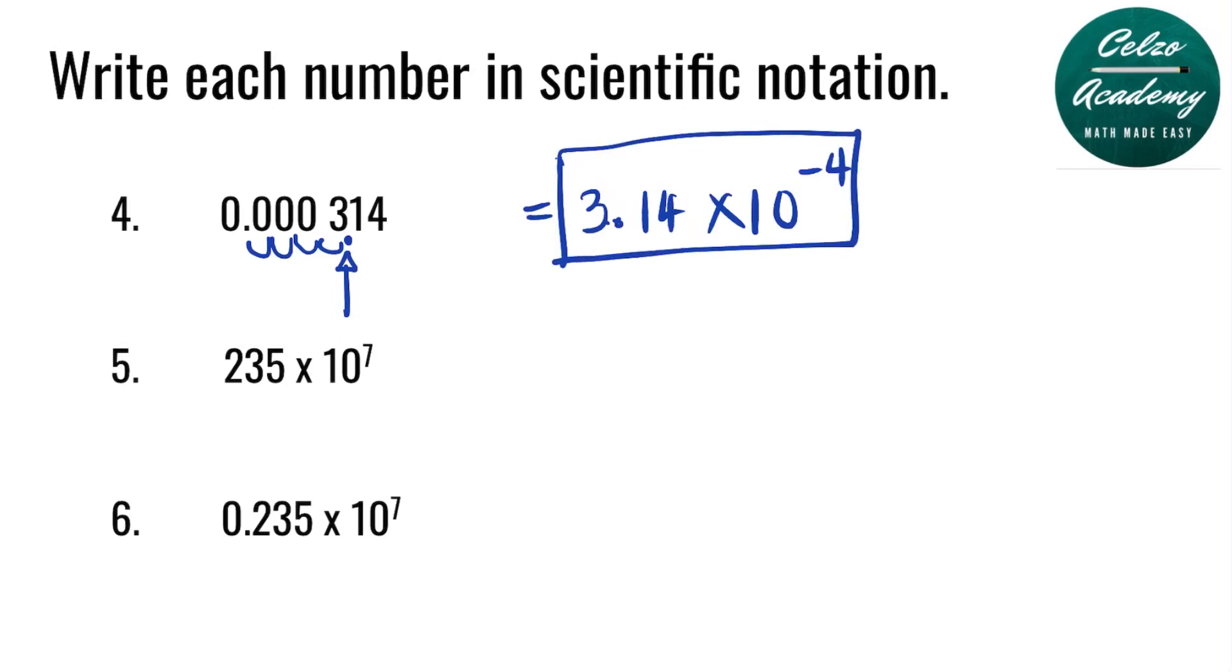Number 5. 235 times 10 to the 7th power. It is in scientific notation, but it's not in simplest form. Take note that the a value can't be more than 10. So instead of 235, we will make it 2.35. And what do you think will happen to the power?